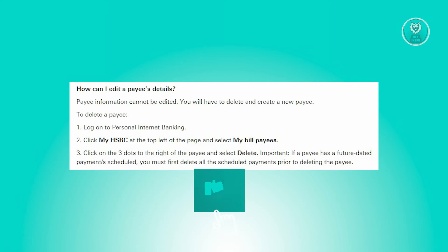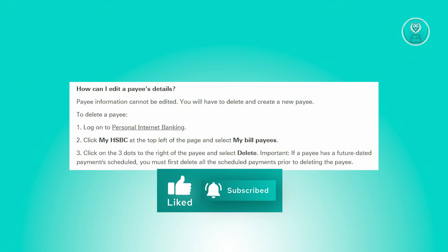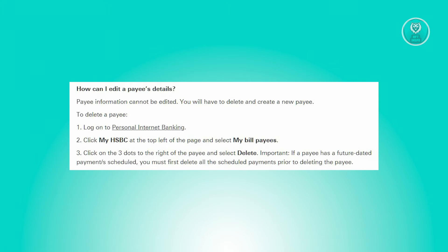First things first, you need to access your HSBC account. Go ahead and open the app and log in. Now navigate to 'My HSBC' at the top left corner of the page and choose 'My Bill Pays.' Locate the payee you wish to delete, click on the three dots next to their name, and then select 'Delete.'